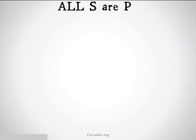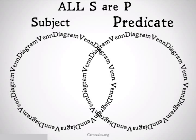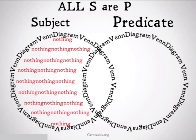If I take a generic universal affirmative — all S are P — and I set it up as a Venn diagram, with the first side being the subject and the other side being the predicate, in order to represent all S are P, what I'm going to do is shade in the side of the Venn diagram that is the subject but not the predicate.